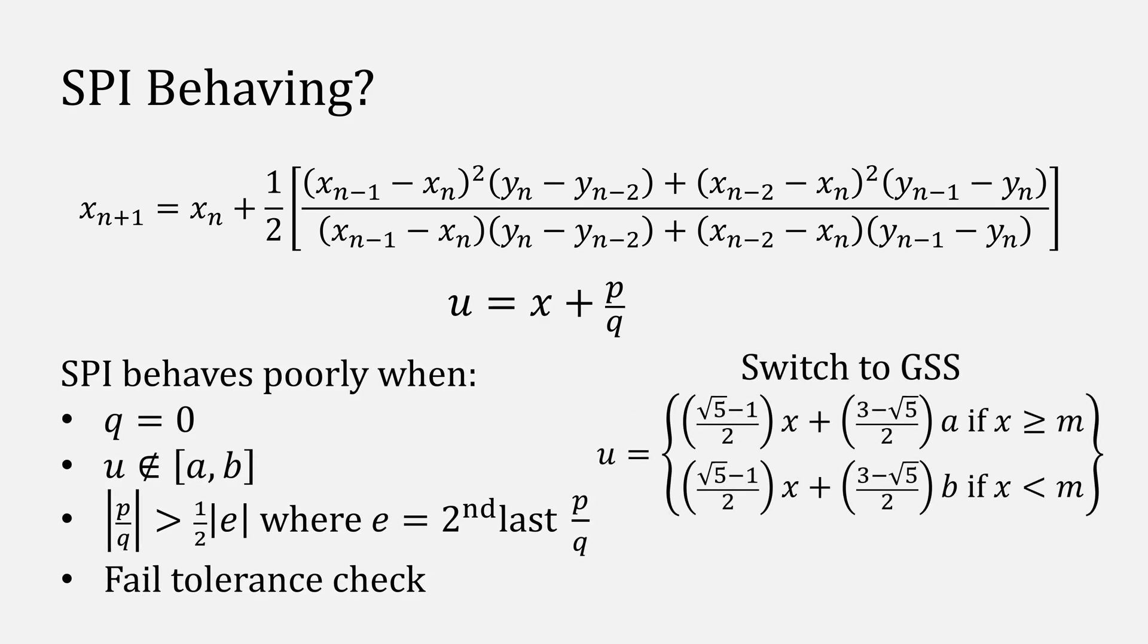Whenever it does behave badly, just switch to golden section search, computing a new u using this equation.